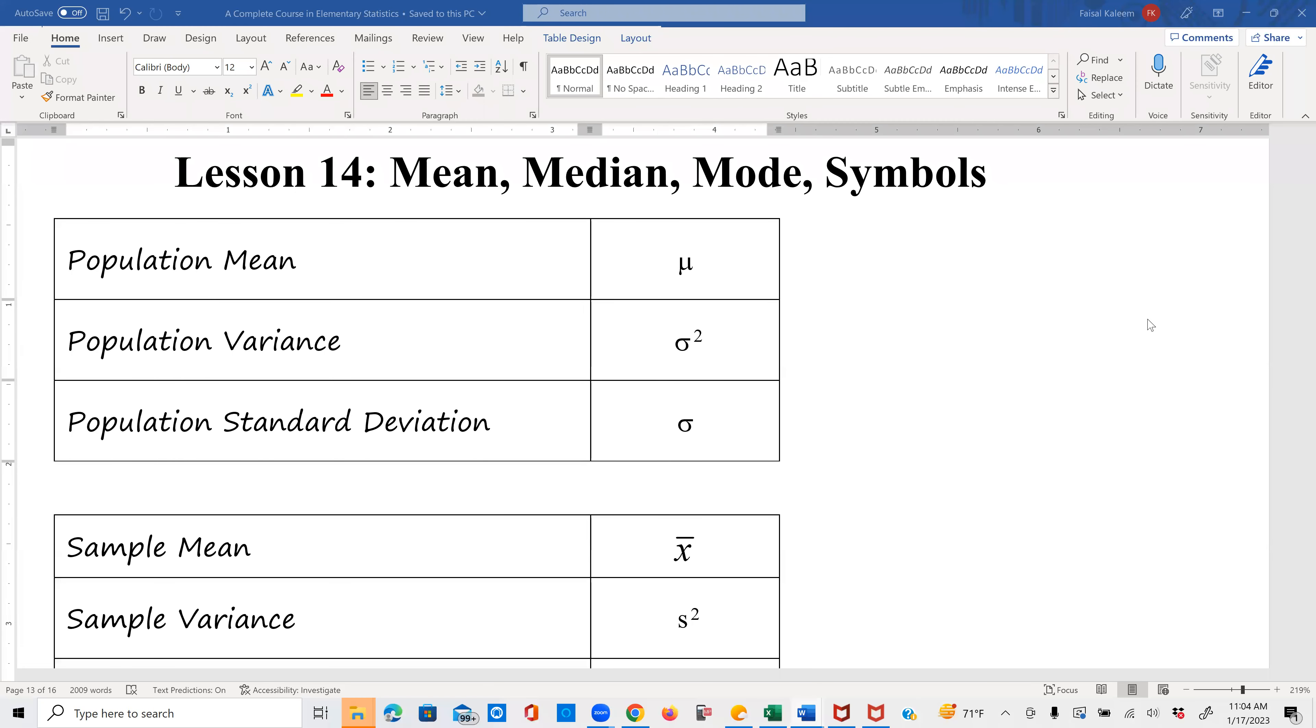So here's a list of symbols that we have to know in this course. Population mean, mu, that's a Greek letter. Population variance, sigma square. Population standard deviation, sigma.